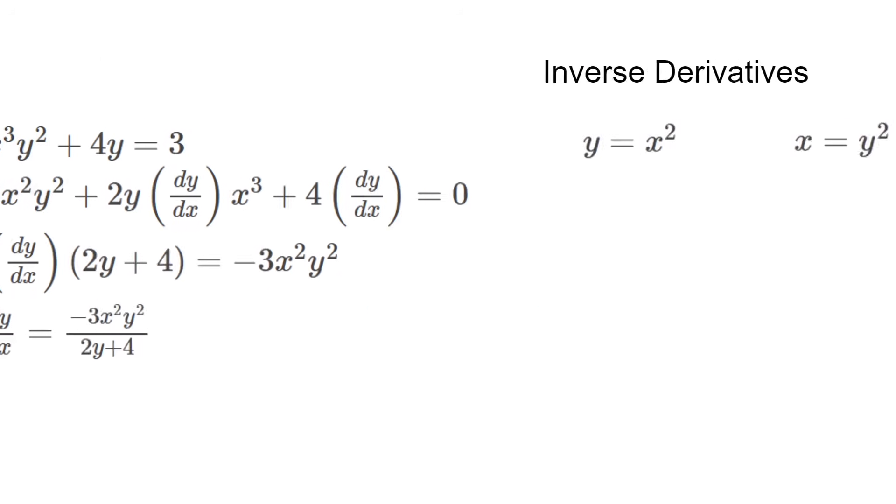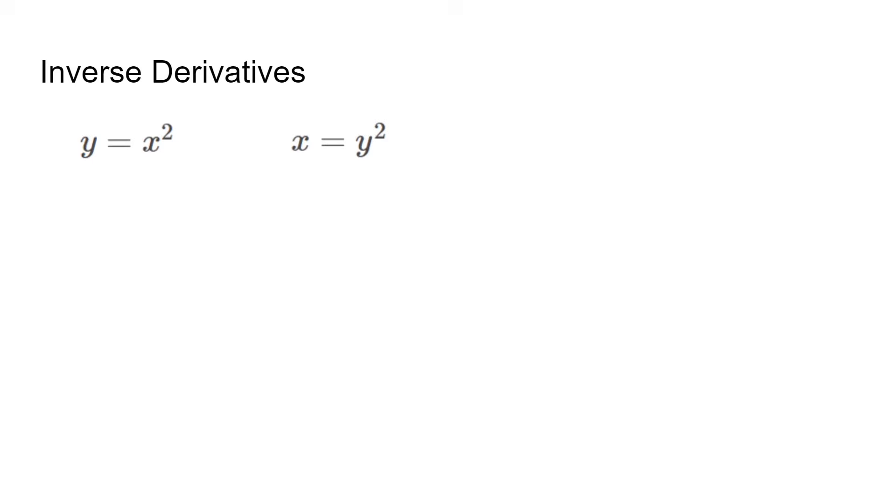Inverse derivatives are the next topic, and it involves inverse functions. A quick review on finding the inverse of a function is replacing the x and the y. The inverse of y equals x squared is x equals y squared, which leads to y equals square root of x. Let's call them f of x and g of x, and the relationship is that their points can be reversed.